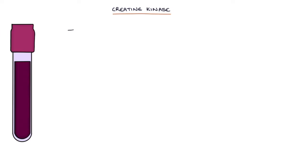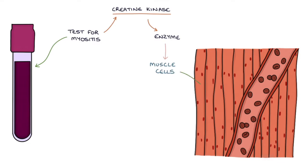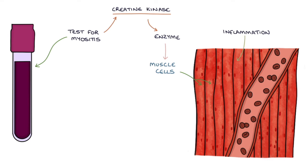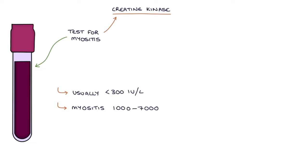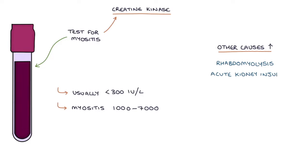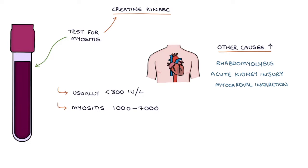The critical test for myositis or muscle inflammation is a creatine kinase blood test. Creatine kinase is an enzyme found inside muscle cells. Inflammation inside muscle cells causes the release of creatine kinase. It is usually less than about 300 international units per litre, but with myositis the result can be in the multiples of thousands. Other causes of a raised creatine kinase include rhabdomyolysis, acute kidney injury, myocardial infarction, statin use, and strenuous exercise.